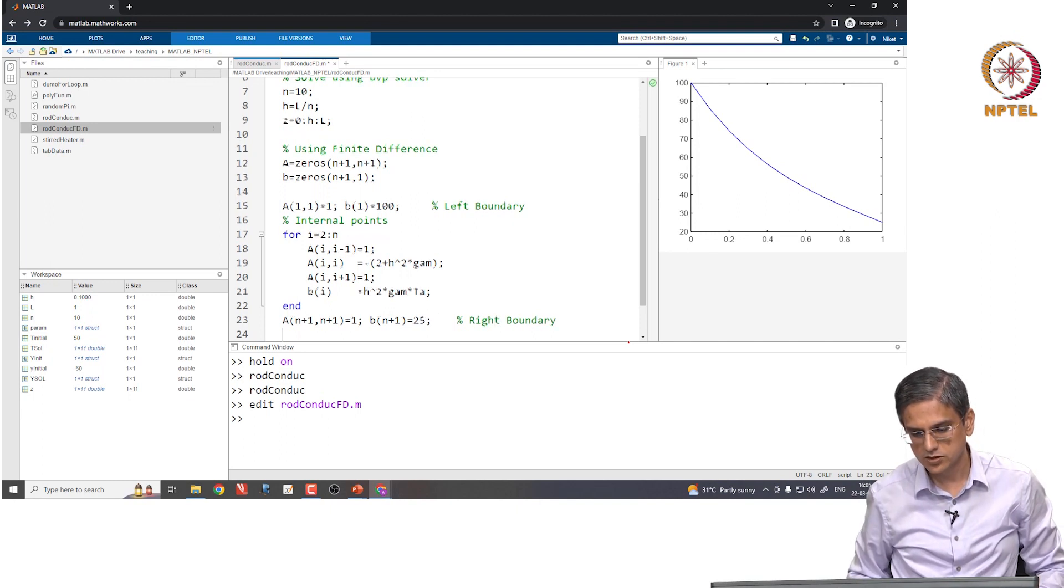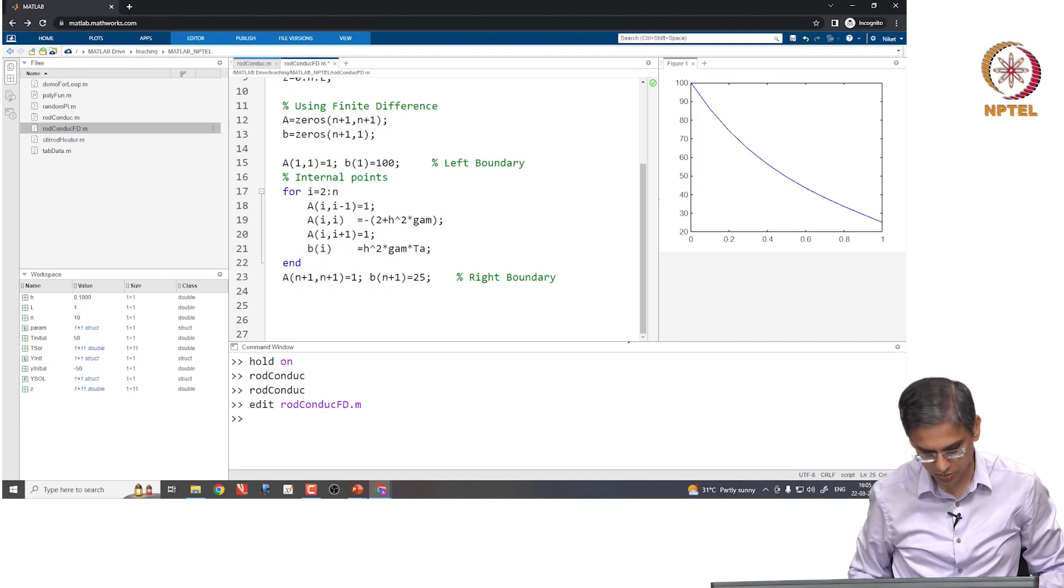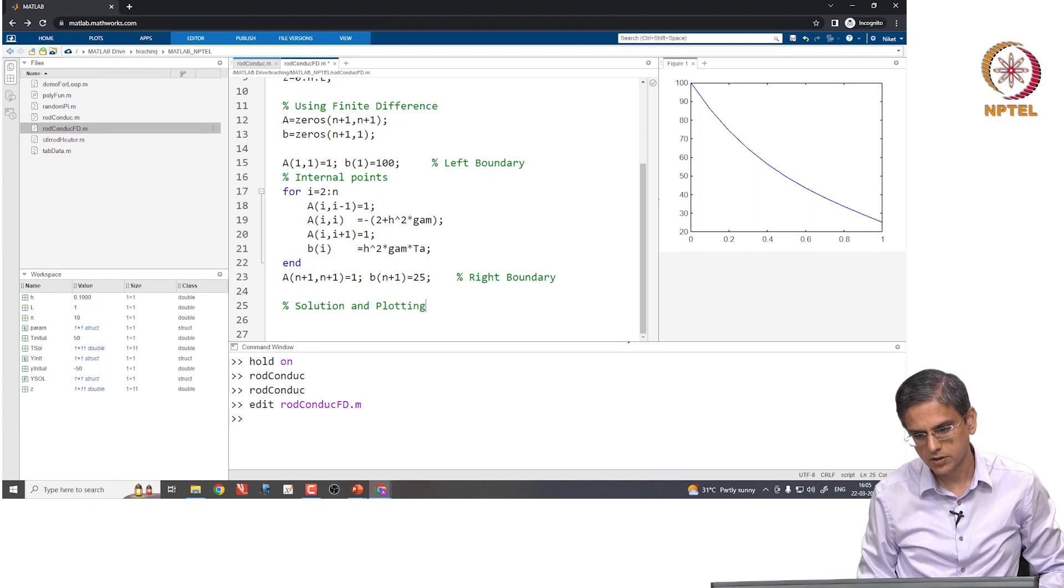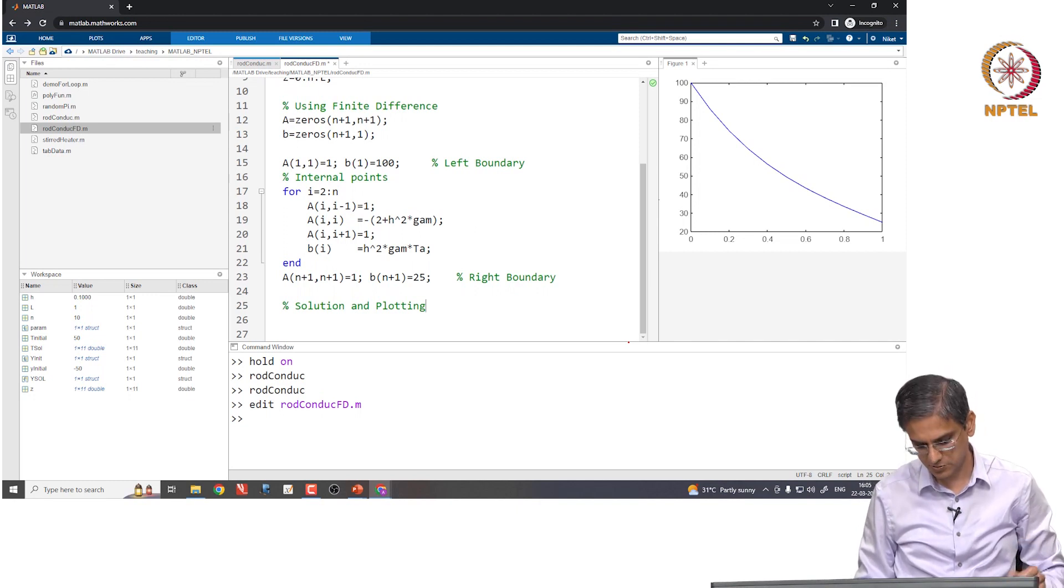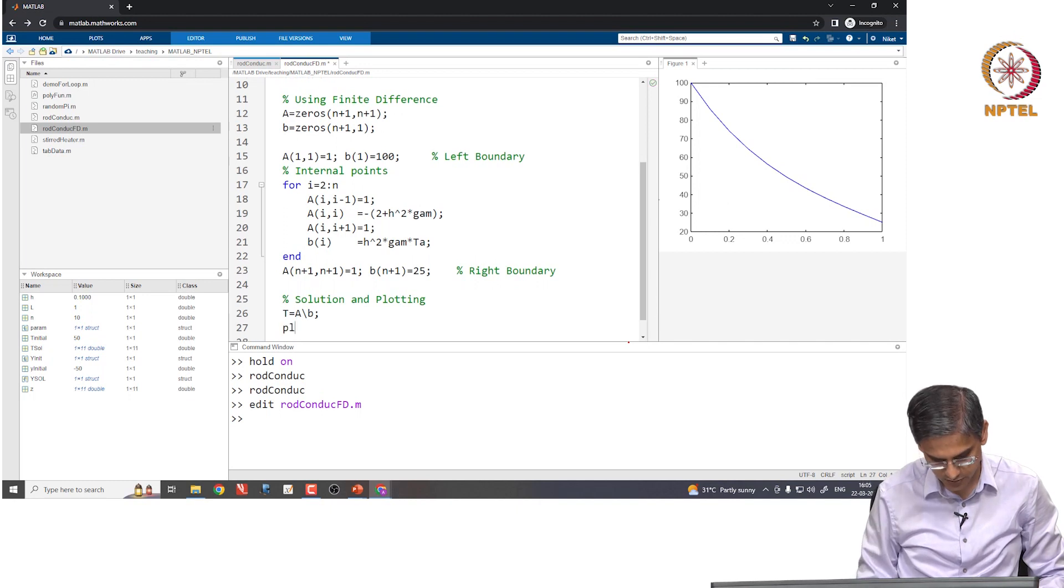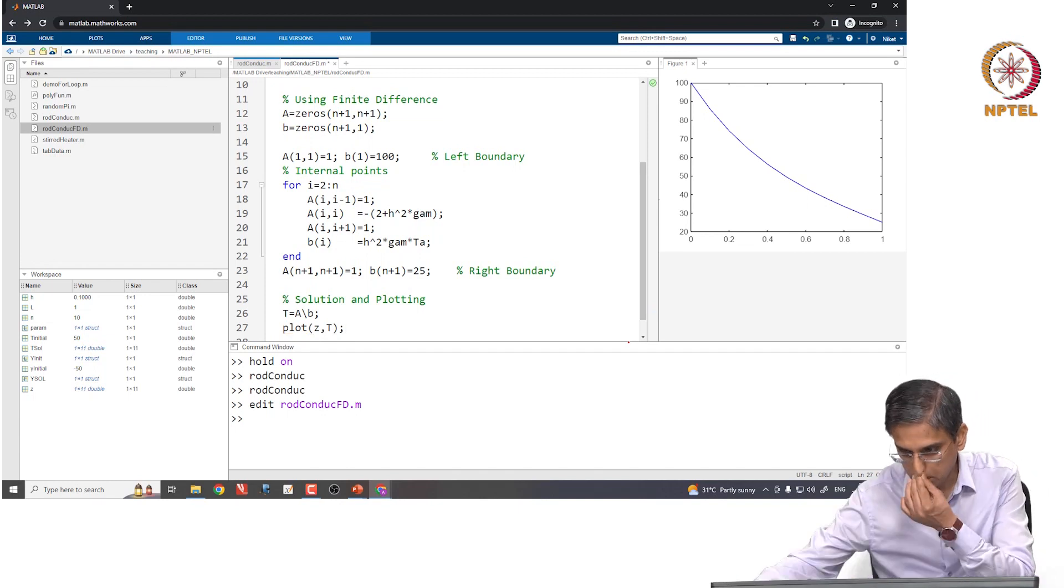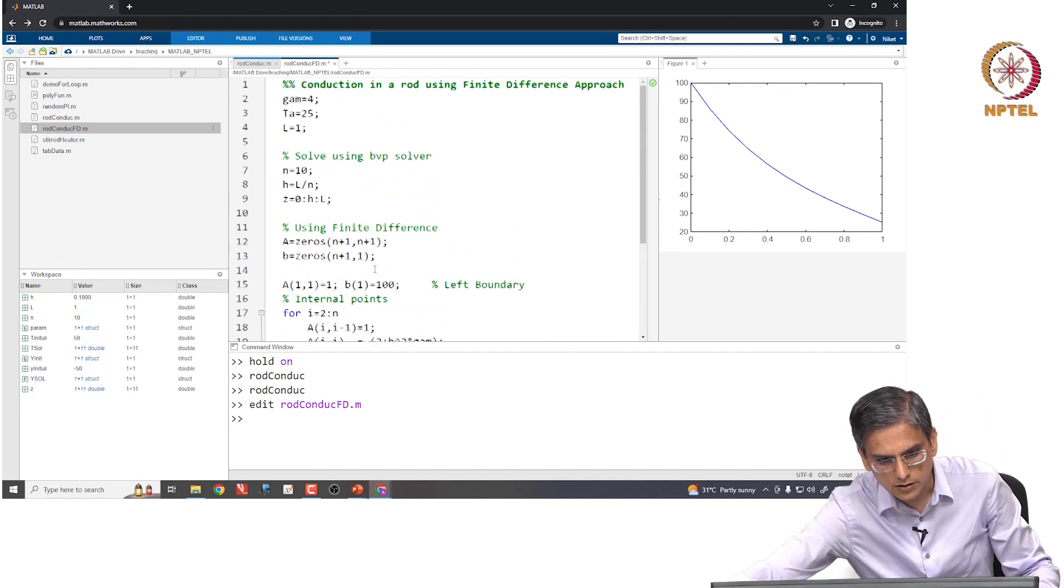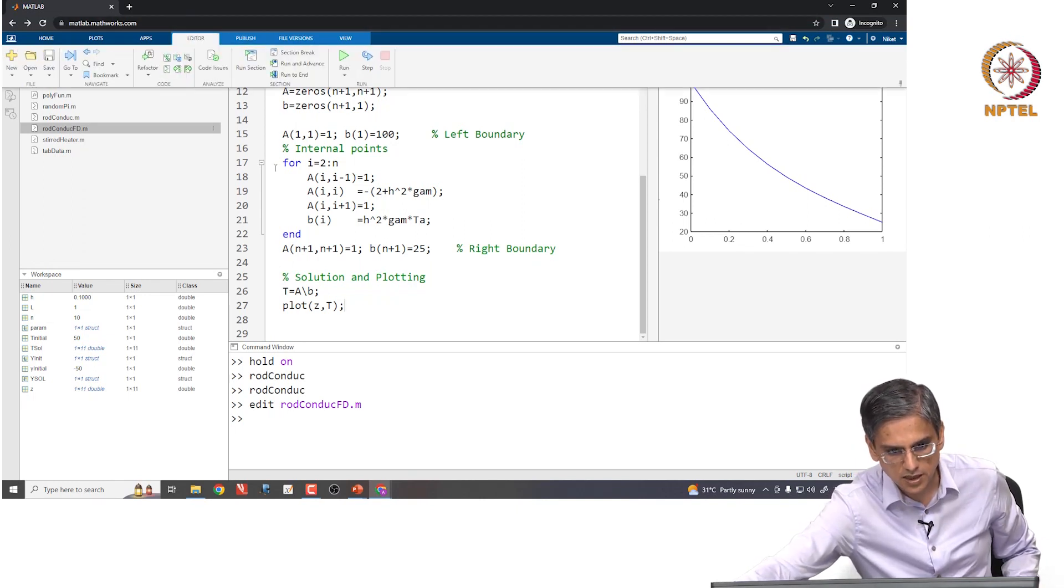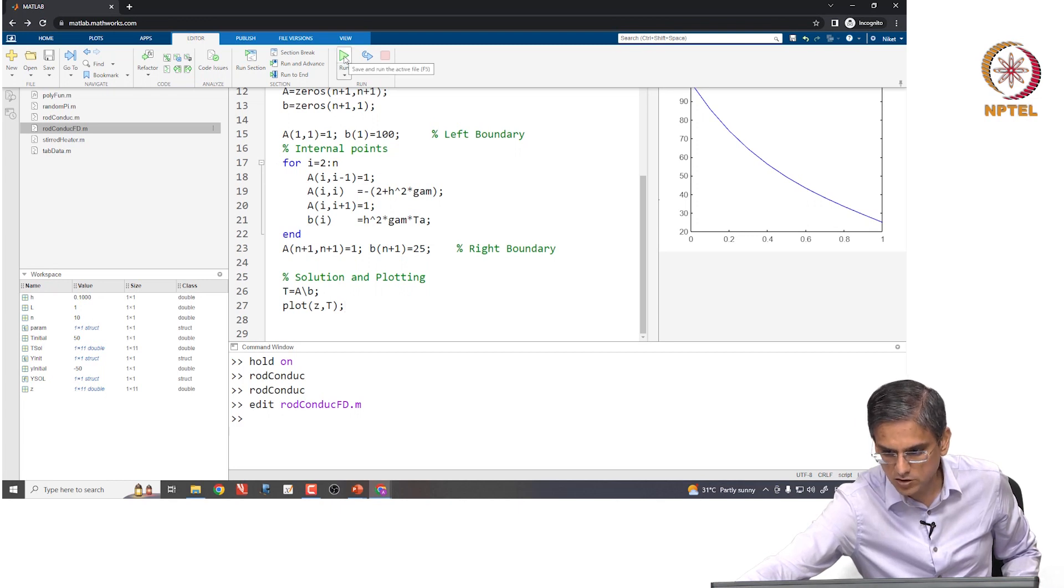Okay. So, this is what we have done in the past. We do not need to use TDMA for this. I will just use shortcut T is going to be nothing but A slash B. That is going to be the shortcut I will use. And I will plot Z comma T. So, let us see what we get. Save this and run and let us see if this runs or if we get an error.